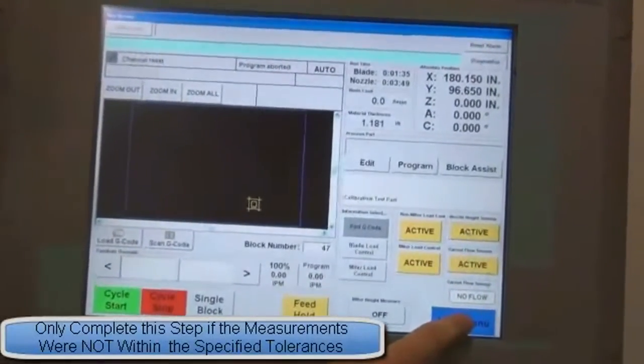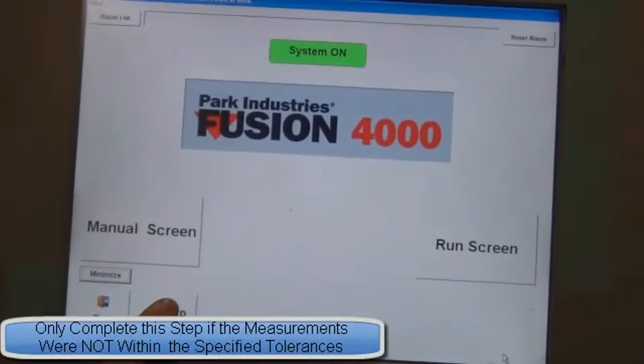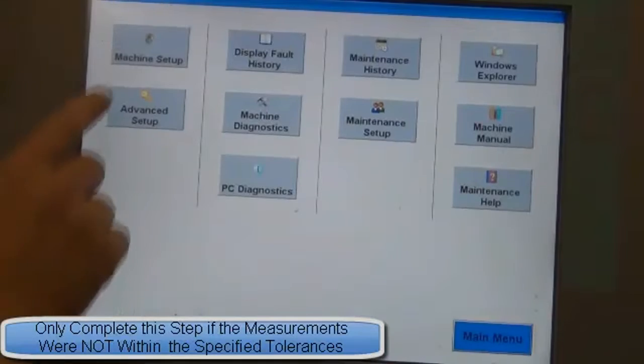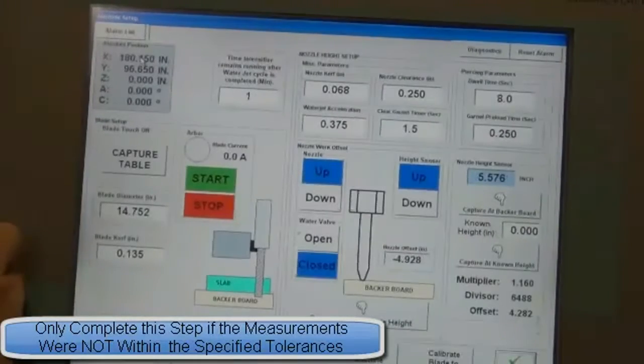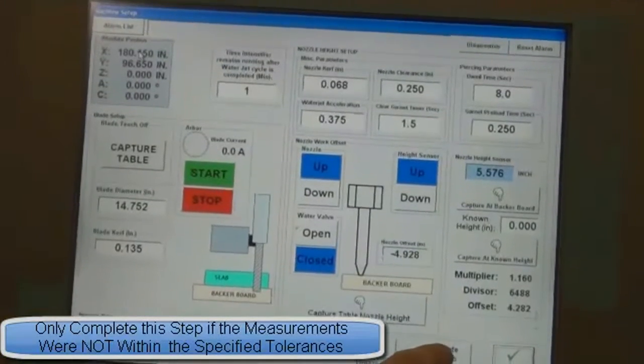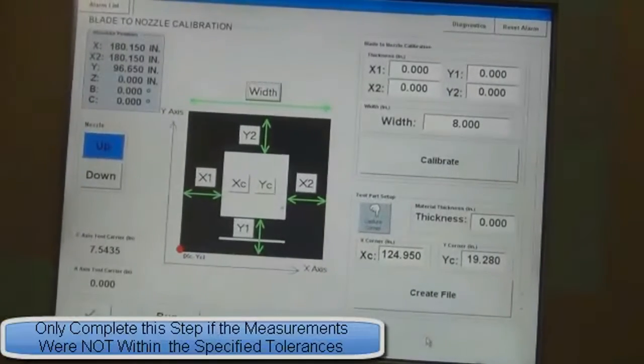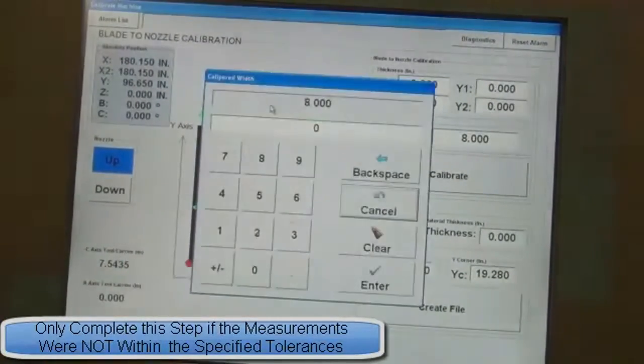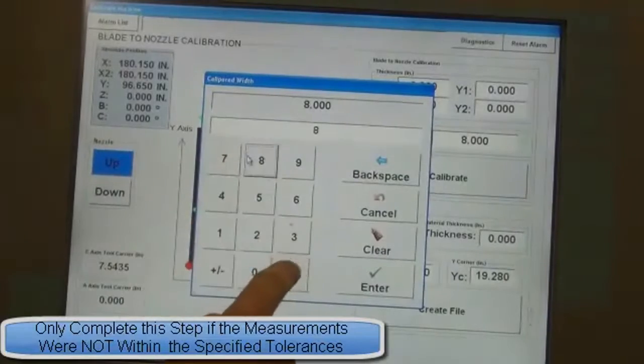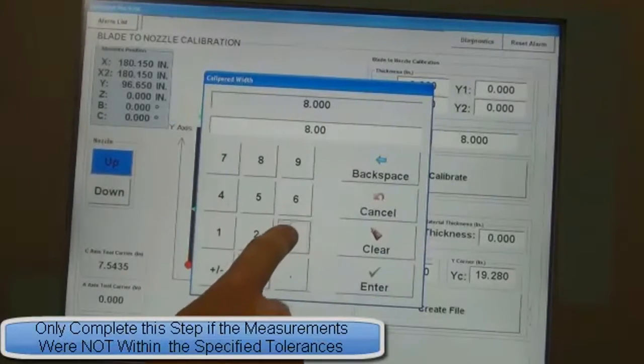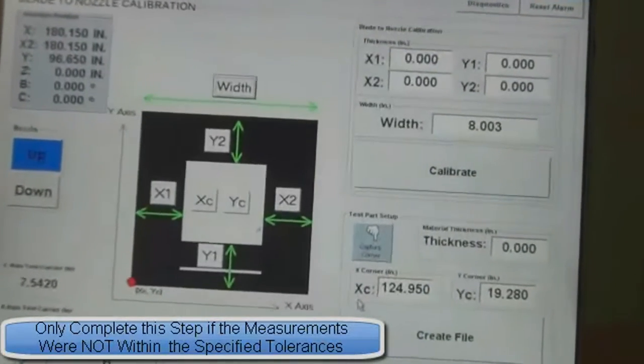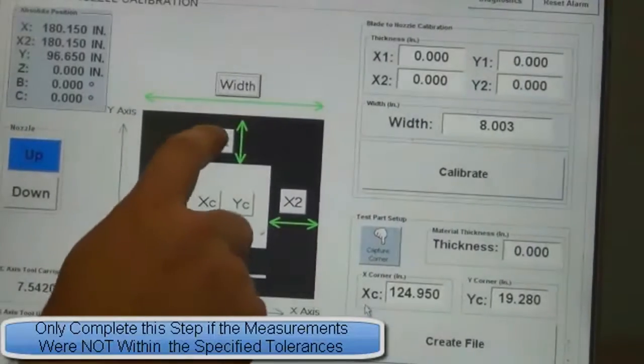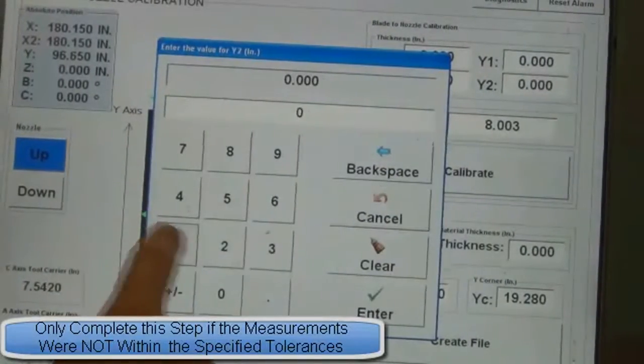Press the Main Menu button. Press the Setup button. Press the Machine Setup button. Press the Calibrate Blade to Nozzle button. Press the Width button and enter the test part width that you captured earlier. Press any of the X or Y buttons and enter the correct corresponding measurements.